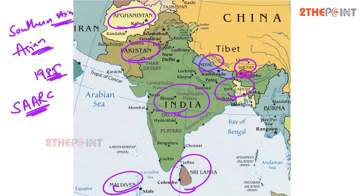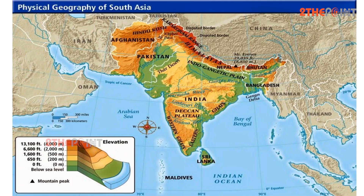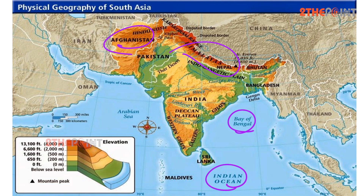SAARC includes all eight nations that comprise South Asia. South Asia extends south from the main part of the continent to the Indian Ocean. The principal boundaries of South Asia are the Indian Ocean, the Himalayas, and Afghanistan. The Arabian Sea borders Pakistan and India to the west, and the Bay of Bengal borders India and Bangladesh to the east.